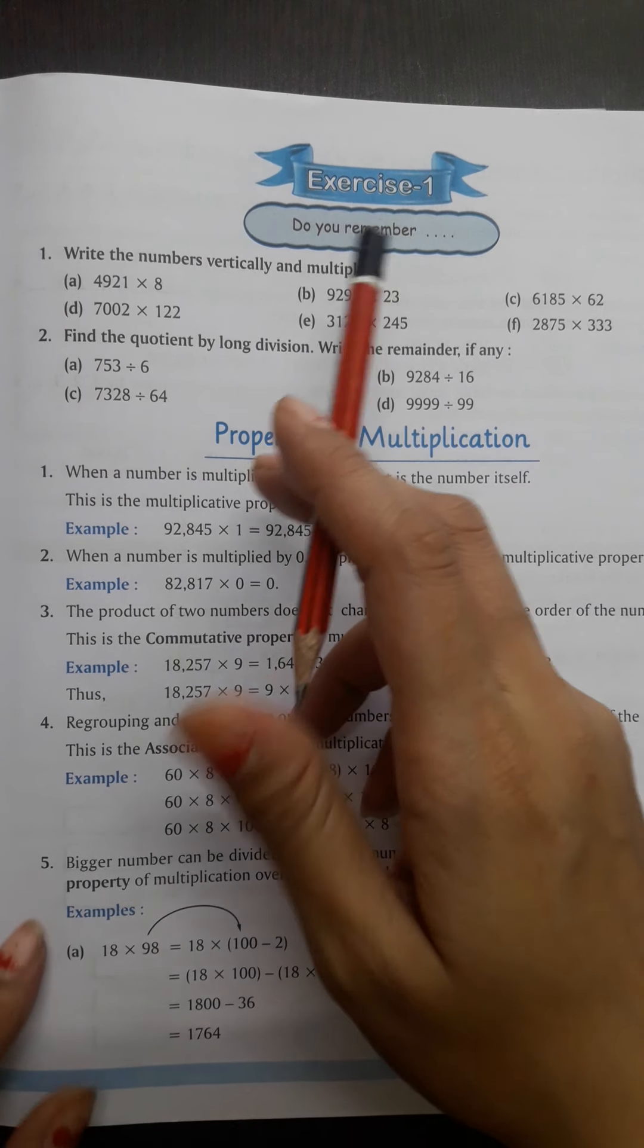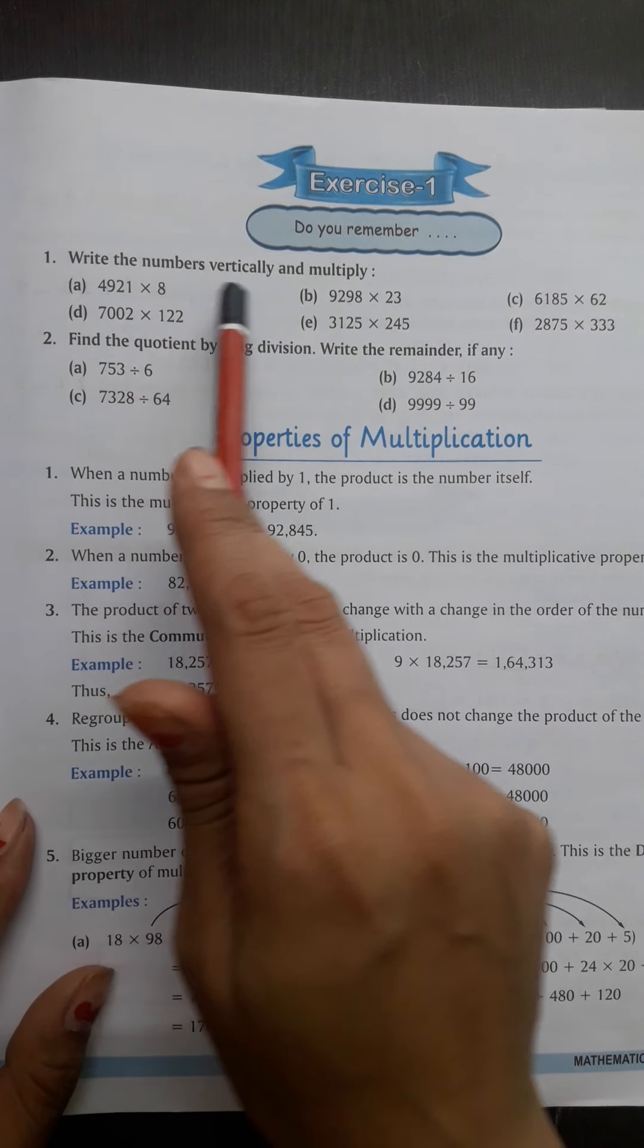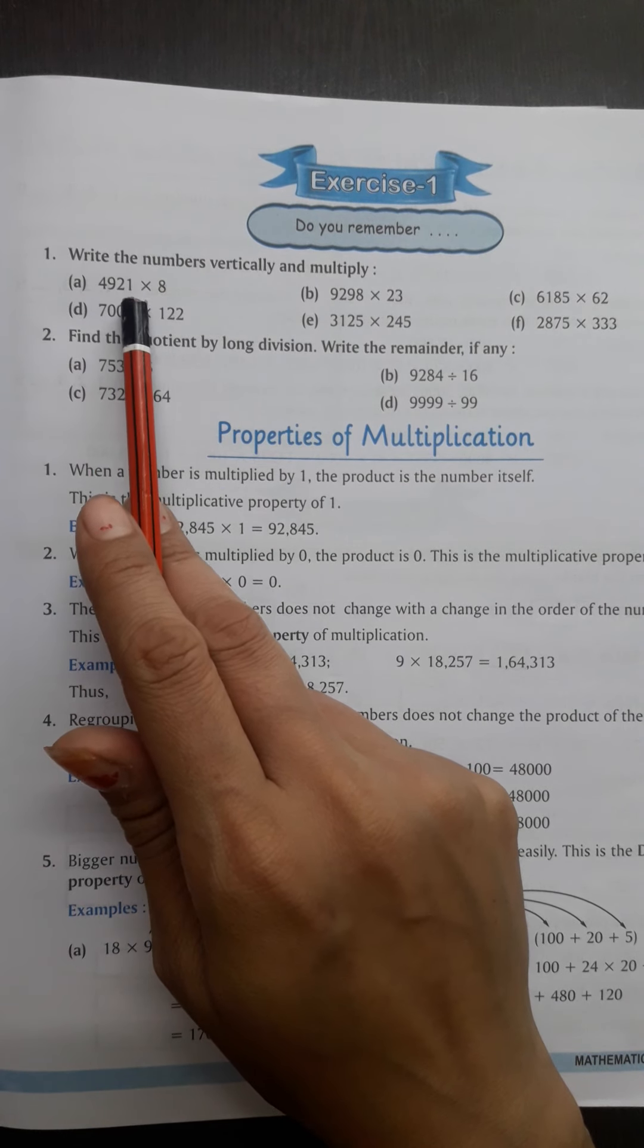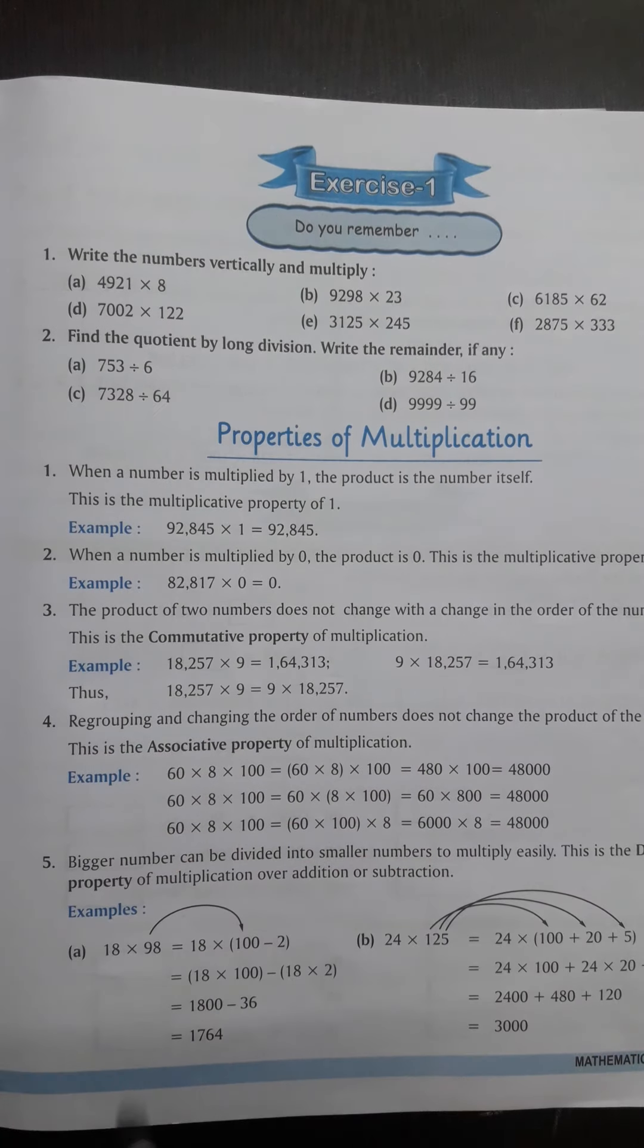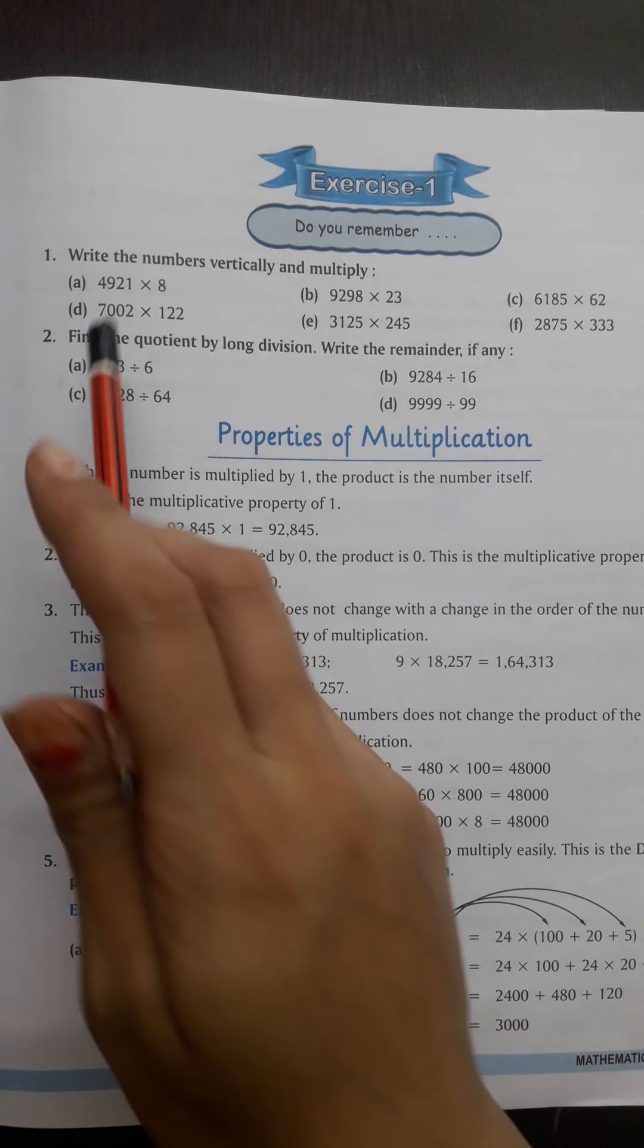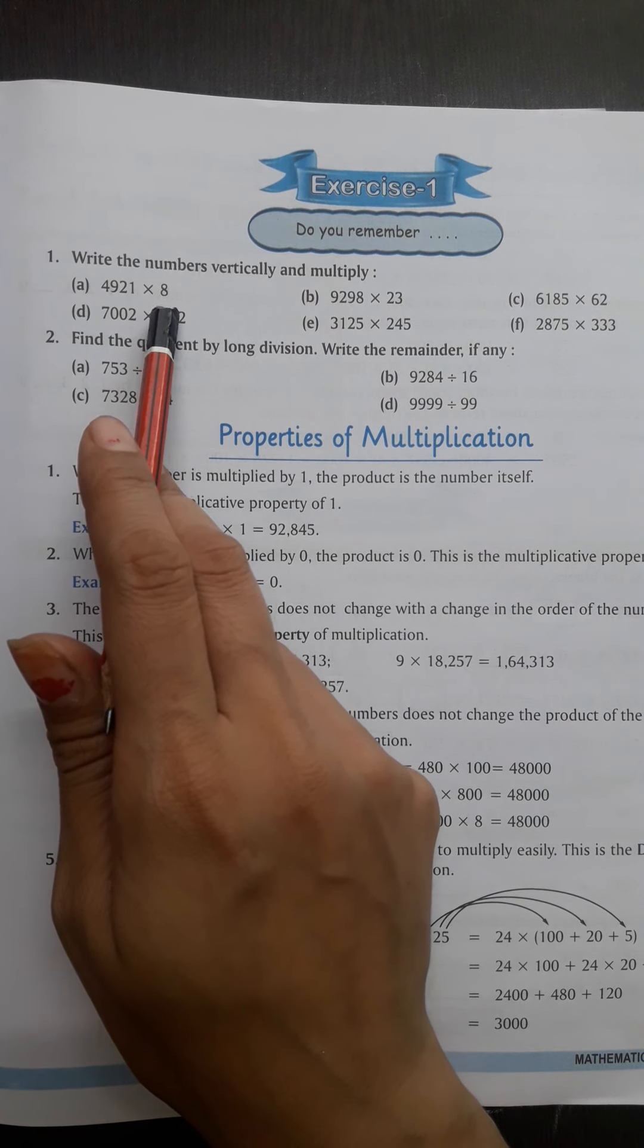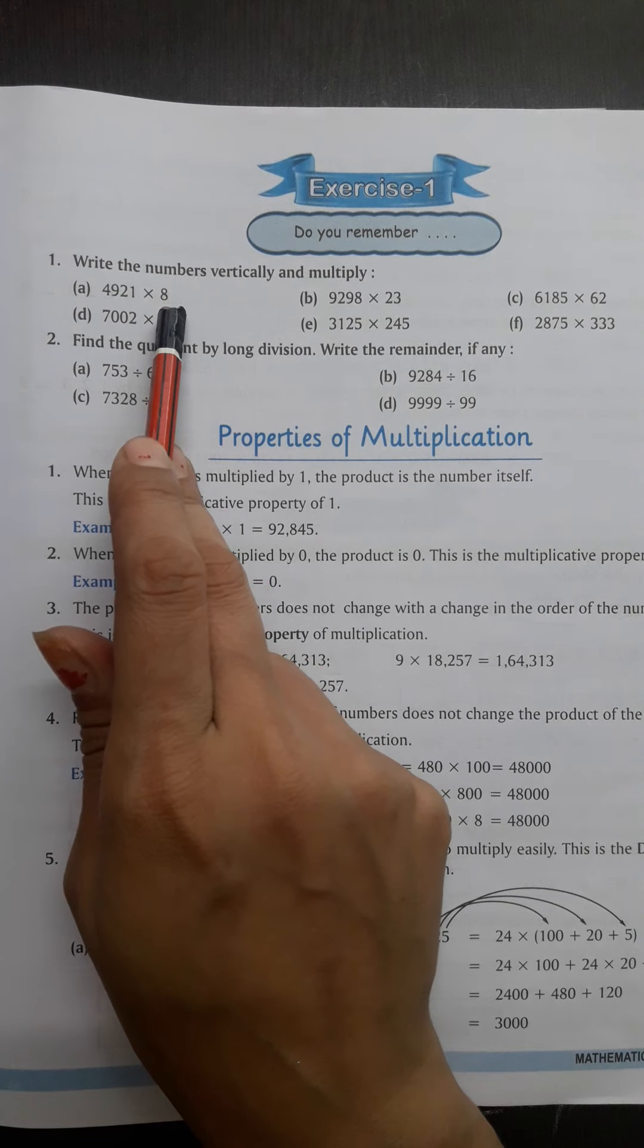Now, exercise number 1, question number 1. Write the numbers vertically and multiply. You have the numbers given. You have to arrange them and then multiply. Let us see. This is 4921 multiply 8.